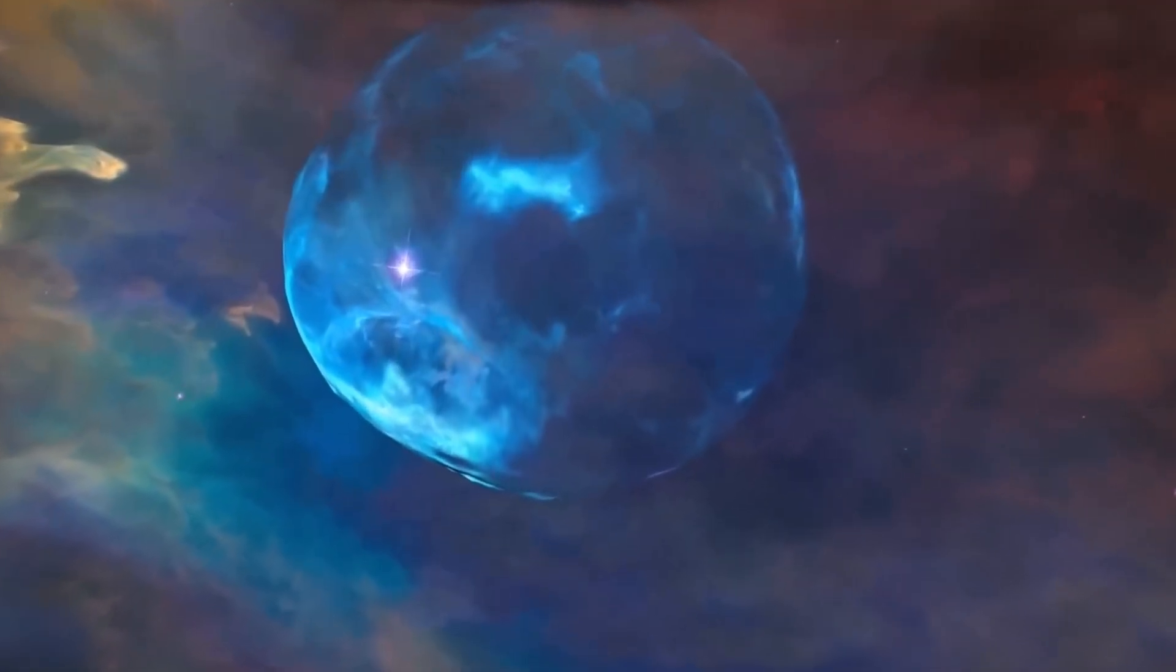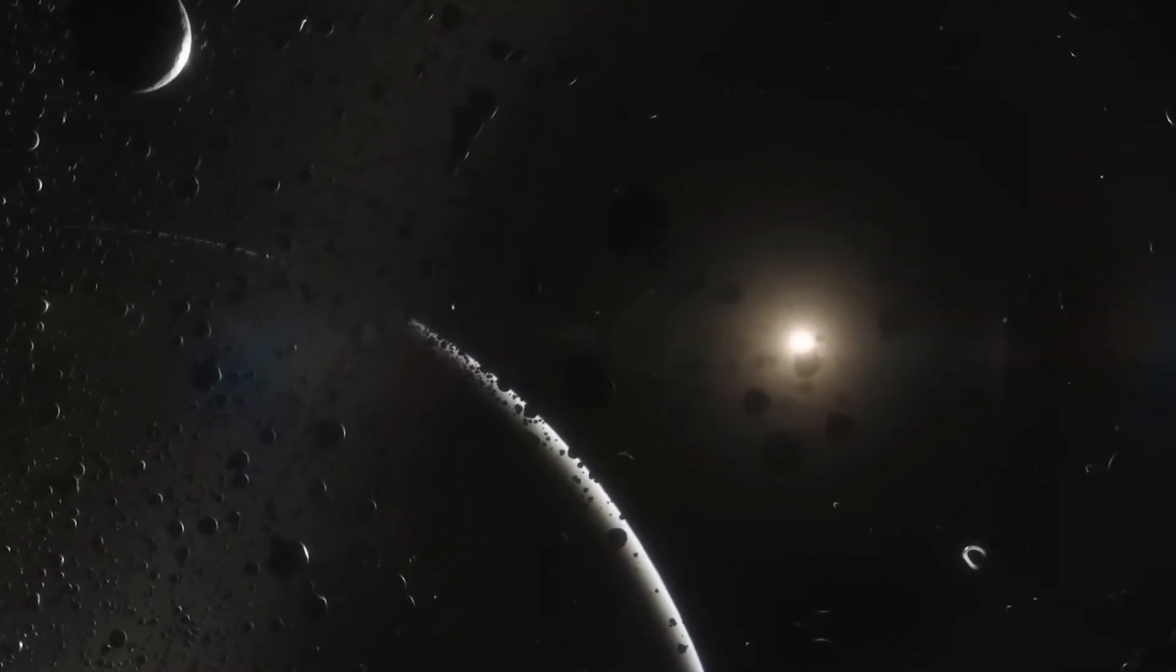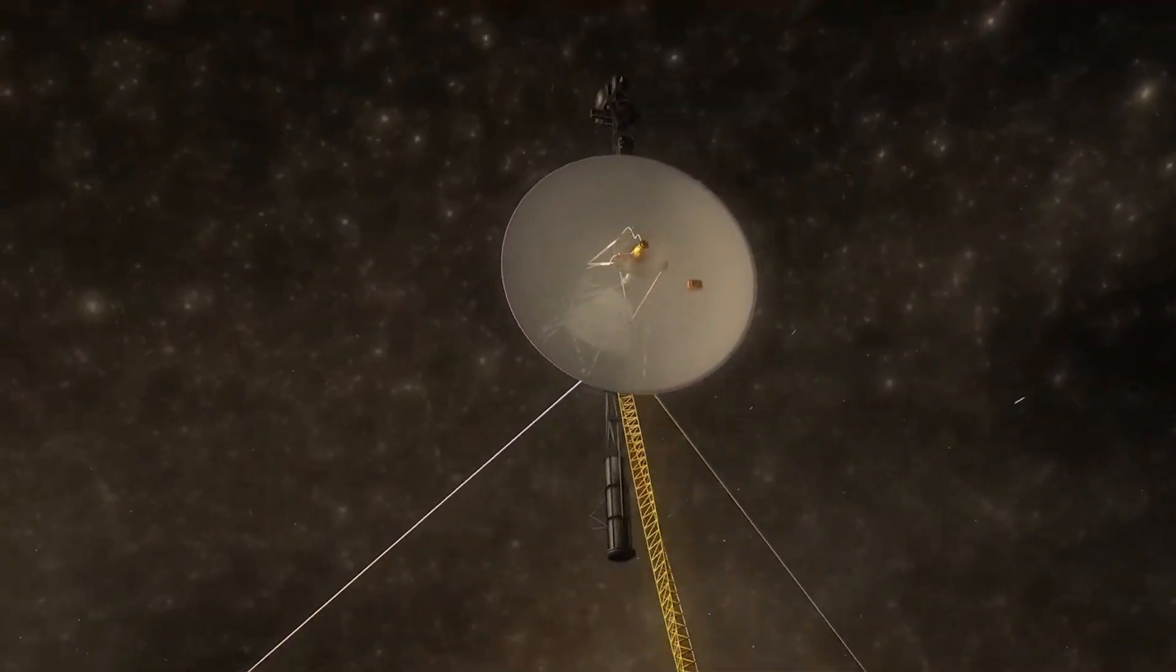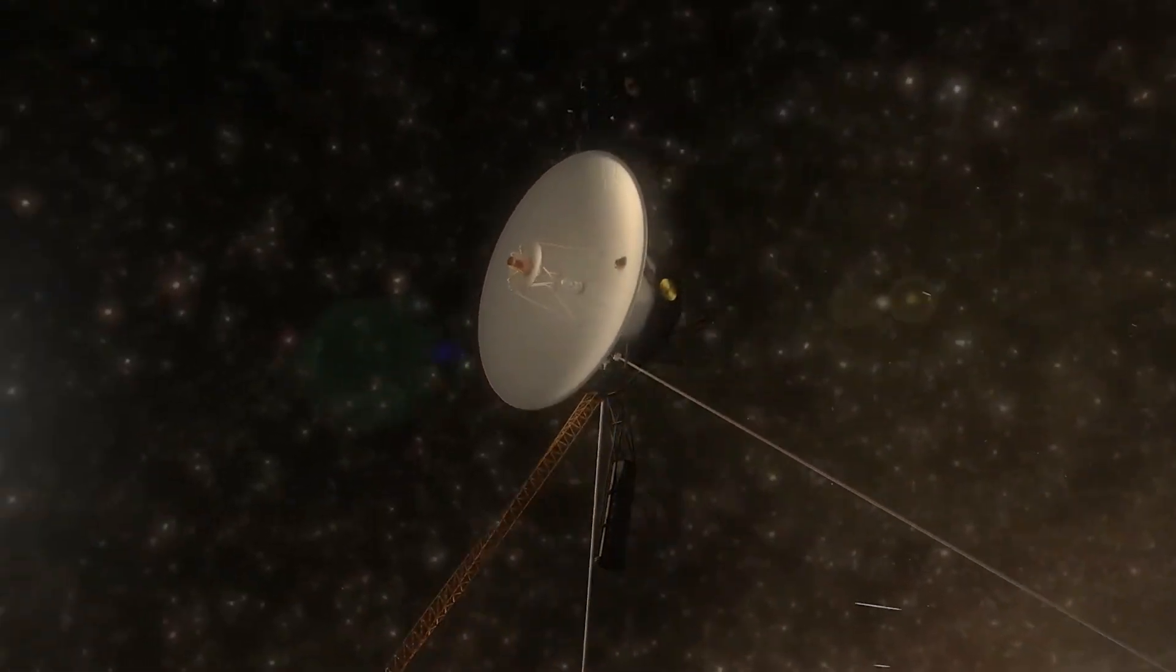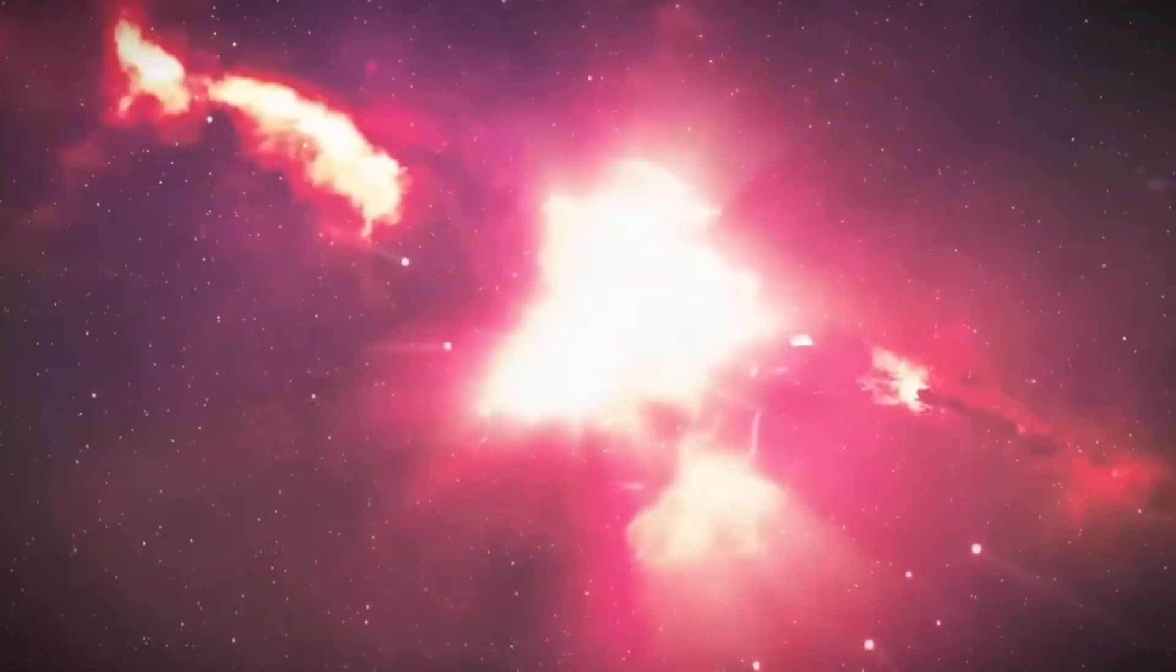Despite launching second, Voyager 1 was the first to reach Jupiter and Saturn, focusing on these planets while Voyager 2 explored Jupiter, Saturn, Uranus, and Neptune over a decade. The data transmitted by the Voyagers have profoundly shaped our understanding of the outer solar system, earning their place in textbooks and media alike.